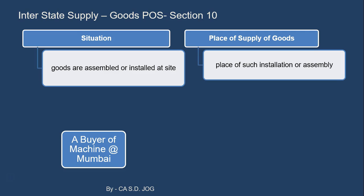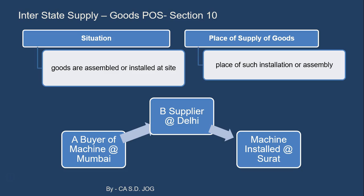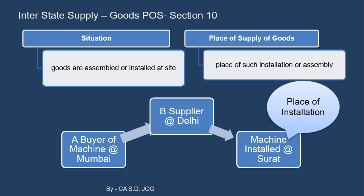Say A is a buyer of a machine and his office is in Mumbai, and the supplier B is in Delhi. B is supplying the machine from Delhi, but the machine is required not at A's office — it is to be installed at his factory in Surat. So the place of supply will be the place of installation of the machine, that is Surat. Very simple, very logical provision.